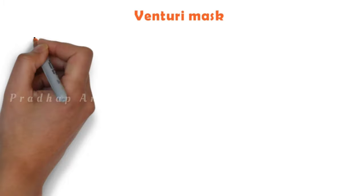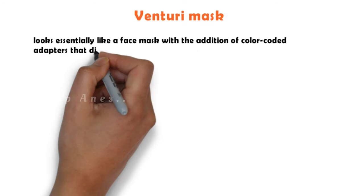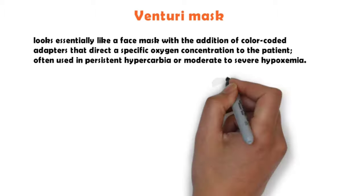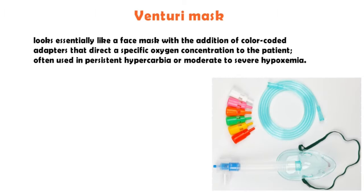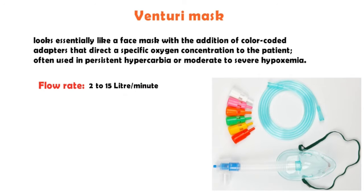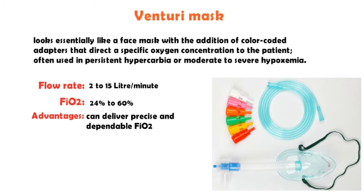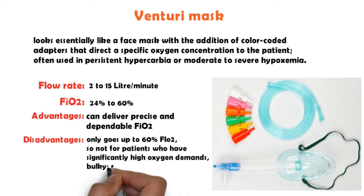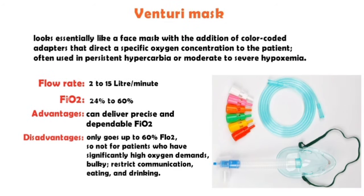Venturi mask — looks essentially like a face mask with the addition of color-coded adapters that direct a specific oxygen concentration to the patient; often used in persistent hypercarbia or moderate to severe hypoxemia. Flow rate: 2–15 liters per minute. FiO2: adapters deliver set amounts of FiO2 at 24–60%. Advantages: can deliver precise and dependable FiO2. Disadvantages: only goes up to 60% FiO2, so not for patients who have significantly high oxygen demands; bulky and restricts communication, eating, and drinking.